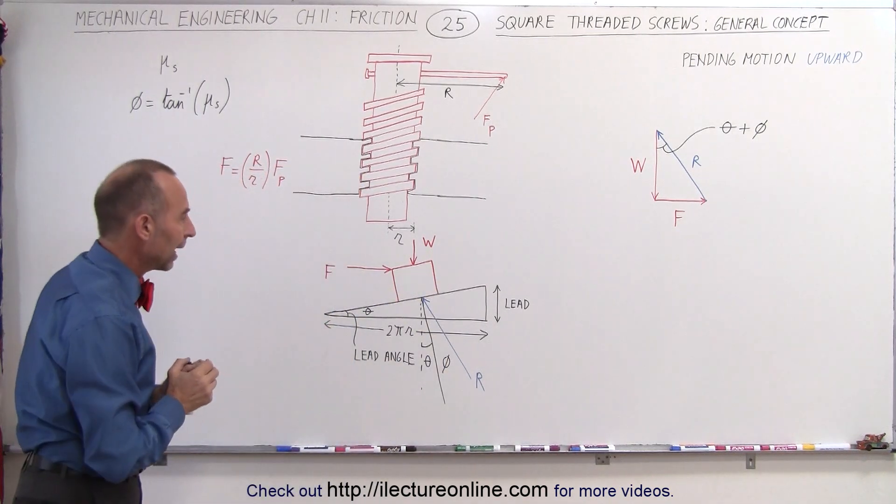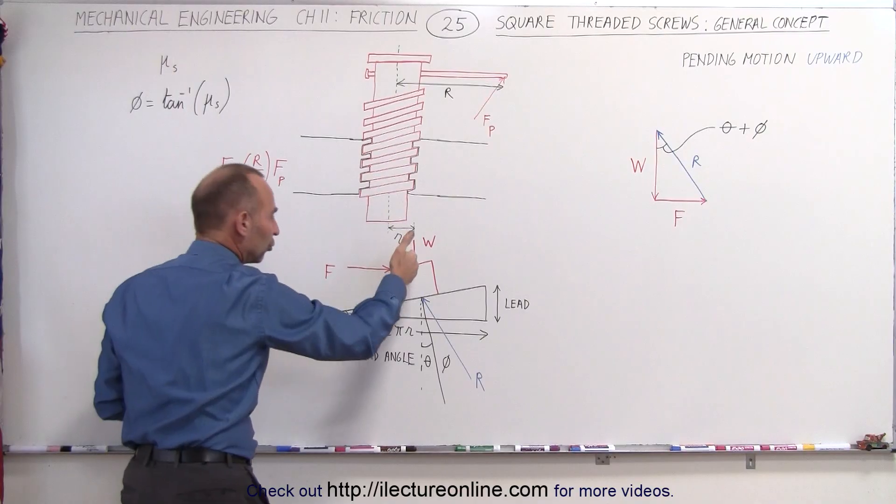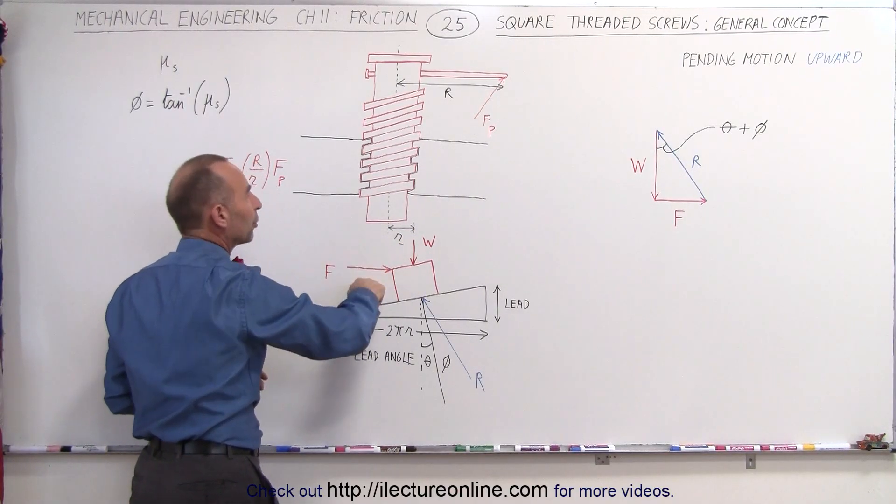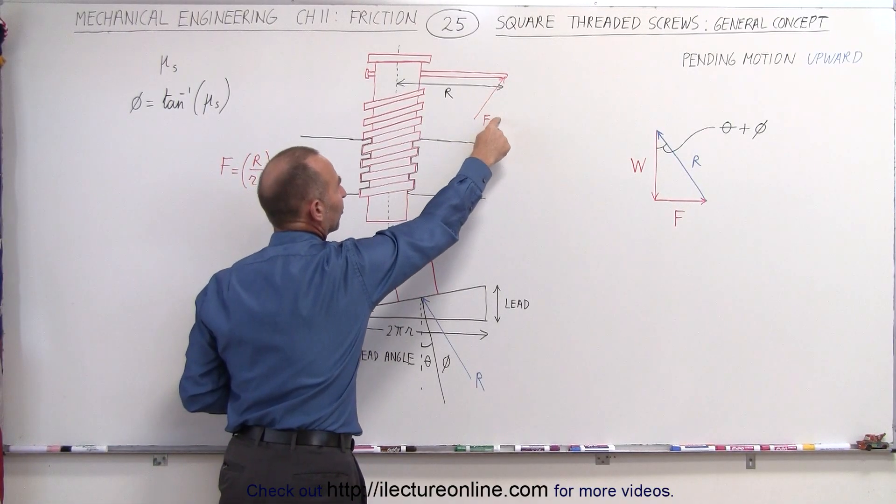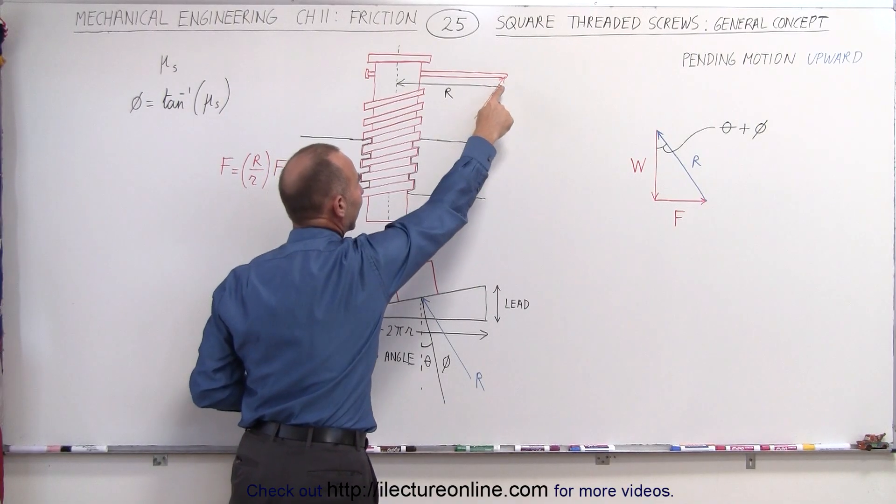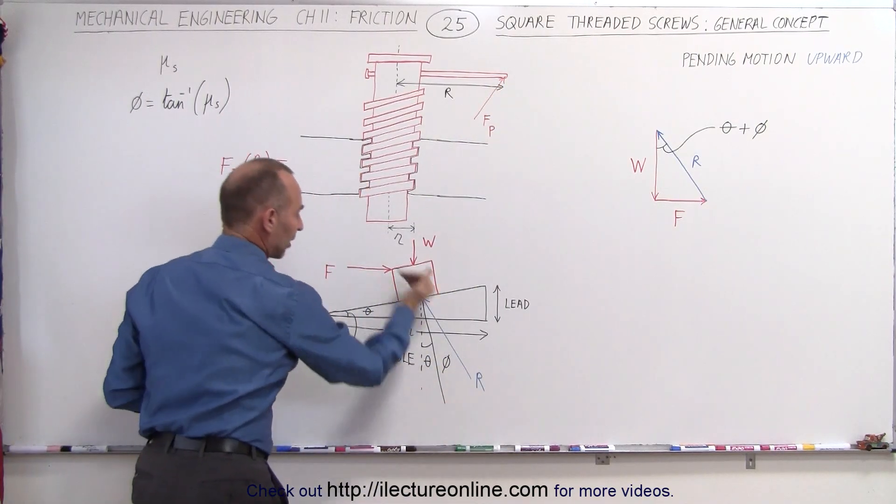That's how you want to take a look at it. So we have the weight of the screw, the force applied to make the screw go upward, which is caused by the force here on the handle, and then we have the reactionary force.